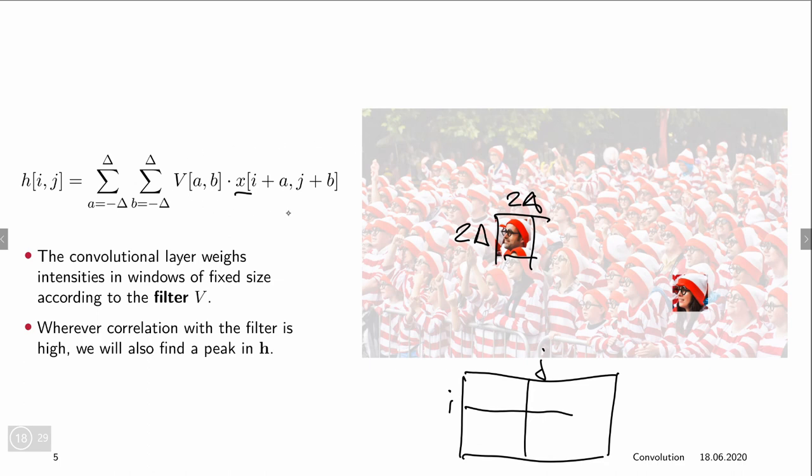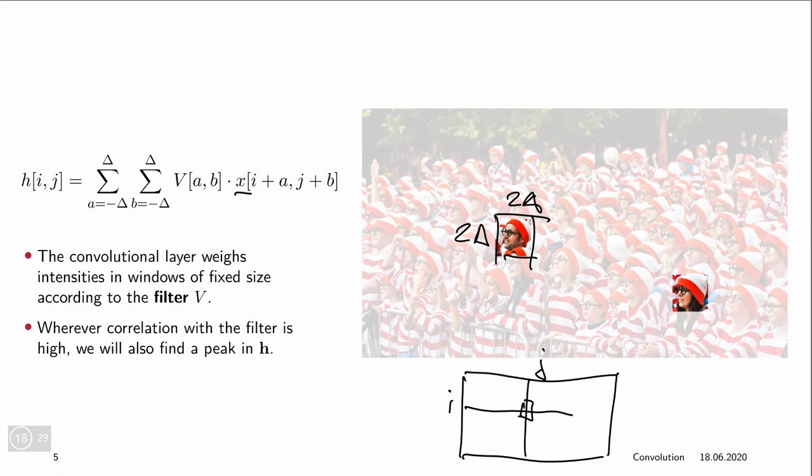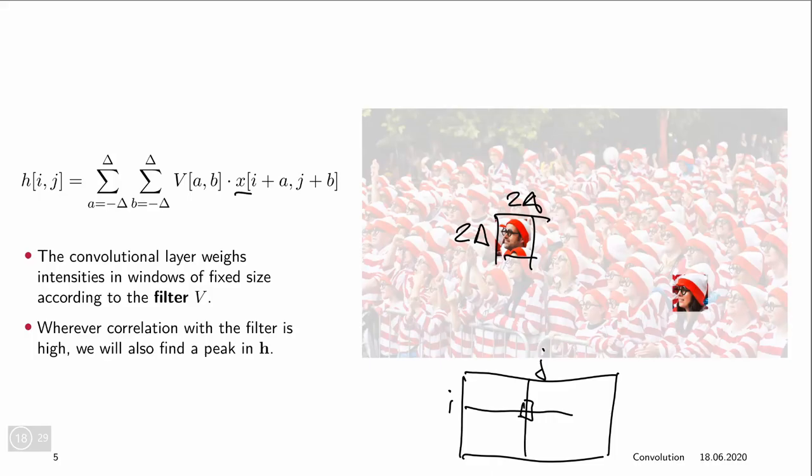And takes all the input pixels in that region and multiplies it by the corresponding entries in the weight matrix, sums all these products up, and this is the value that is put here. So what this means is that whenever there's a face here that looks similar to Waldo, so it's something that has red and white stripes and is a person, even has glasses.